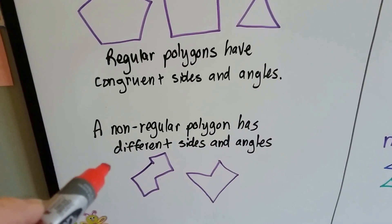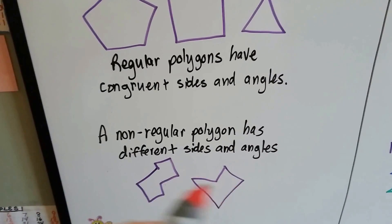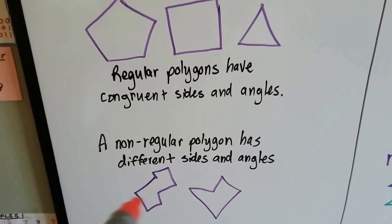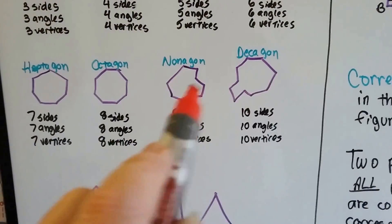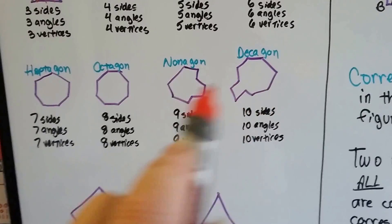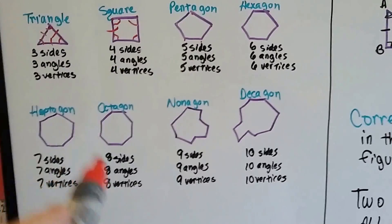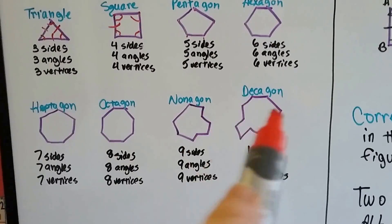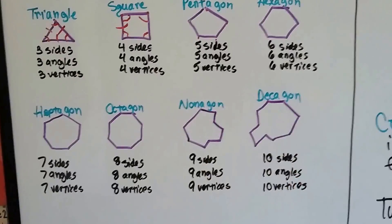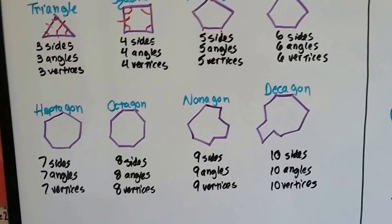A non-regular polygon has different sides and angles, so they're kind of strange looking like this. Sort of like I drew the nonagon and the decagon. These are not regular polygons. Where these are, or they're supposed to be anyway, my drawing may not be perfect. But these, they don't have a line of symmetry, do they? No.